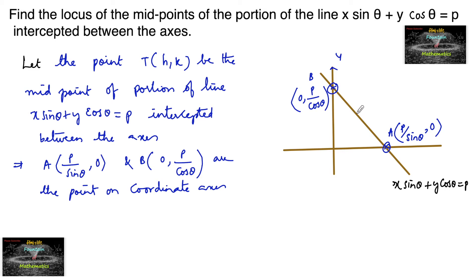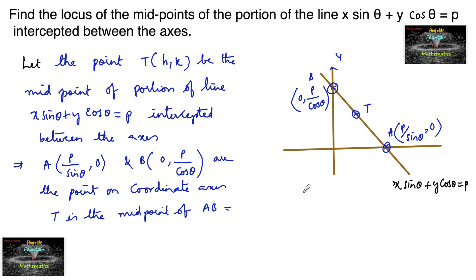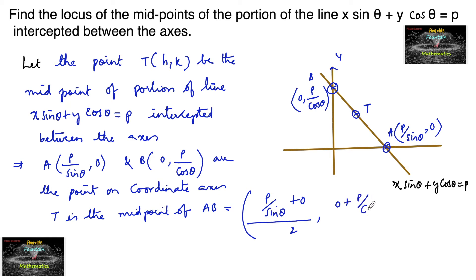Since T is the midpoint of AB, using the midpoint formula: T = ((p/sinθ + 0)/2, (0 + p/cosθ)/2), which gives T = (p/(2sinθ), p/(2cosθ)).